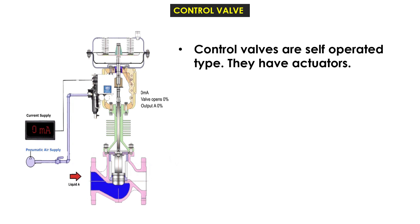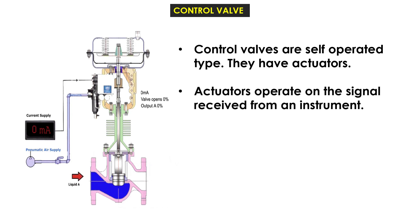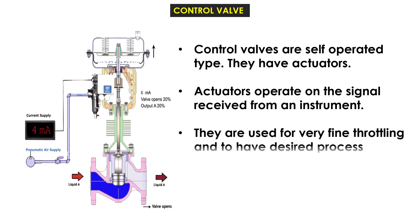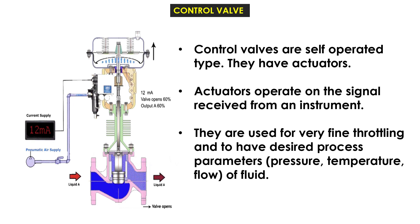Control valves are self-operated type — they have actuators. Actuators operate on the signal received from an instrument. They are used for very fine throttling and to achieve desired process parameters: pressure, temperature, and flow of fluid.